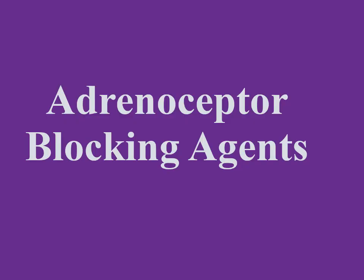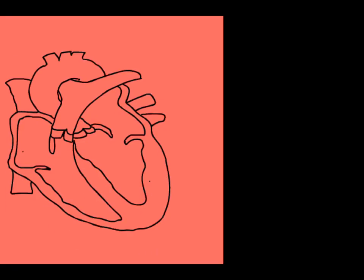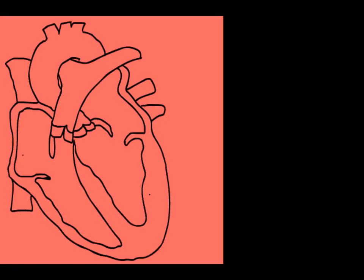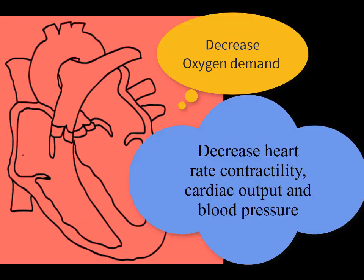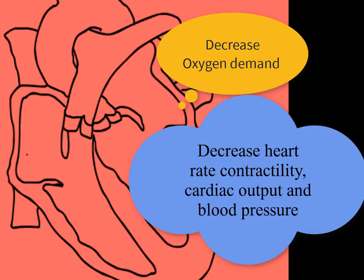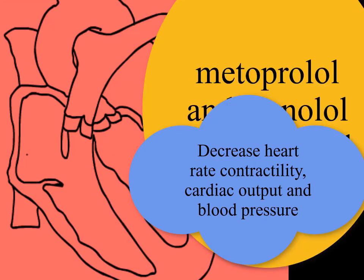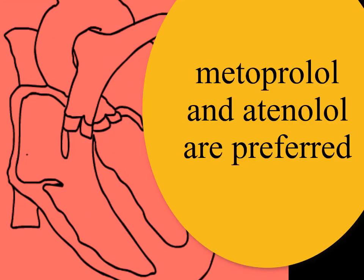Adrenoceptor blocking agents. All beta-blockers are effective in the treatment of classical angina. Beta-adrenergic blockers decrease the oxygen demands of the myocardium by decreasing heart rate, contractility, cardiac output, and blood pressure. Beta-1 selective blockers such as metoprolol and atenolol are preferred. However, beta-blockers are ineffective in vasospastic angina.